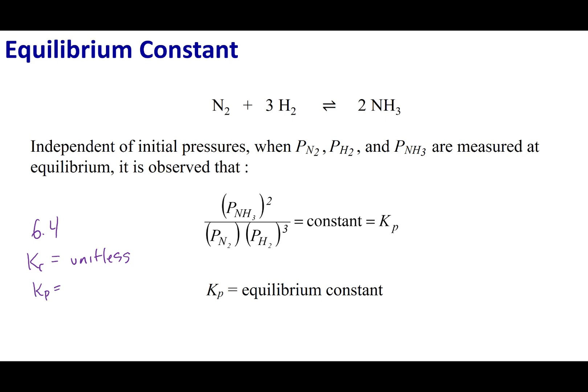The same thing is true for Kp. For Kp, what I want you to do is plug in all the partial pressures in ATMs. However, Kp, like Kc, is unitless. So disregard all the units after you crank in the number, and make sure everything is in ATMs.